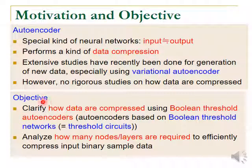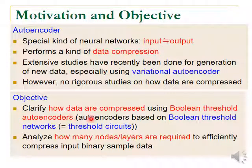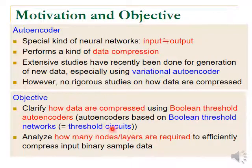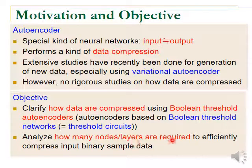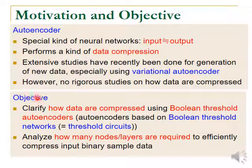Our objective is as follows: we clarify how data are compressed using Boolean-threshold autoencoders — that is, autoencoders based on Boolean-threshold networks. Boolean-threshold networks are equivalent to spatial circuits, and there are many studies on spatial circuits in theoretical computer science. By using this model, we analyze how many nodes and layers are required to efficiently compress input binary sample data.